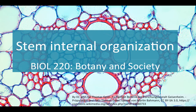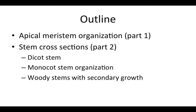This lecture is the second portion of the lecture on stem internal organization. In the first portion we talked about the apical meristem. Here we will talk about how stems are organized in cross-section, starting with dicot stems that have not undergone secondary growth. We will then contrast that with monocots, and we will talk about what happens to dicot stems when they do undergo secondary growth.